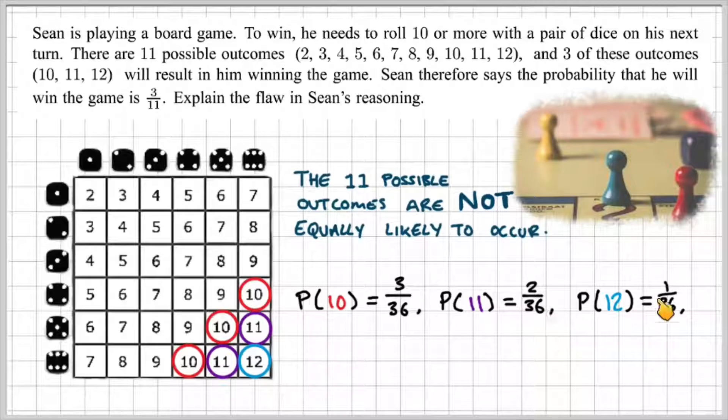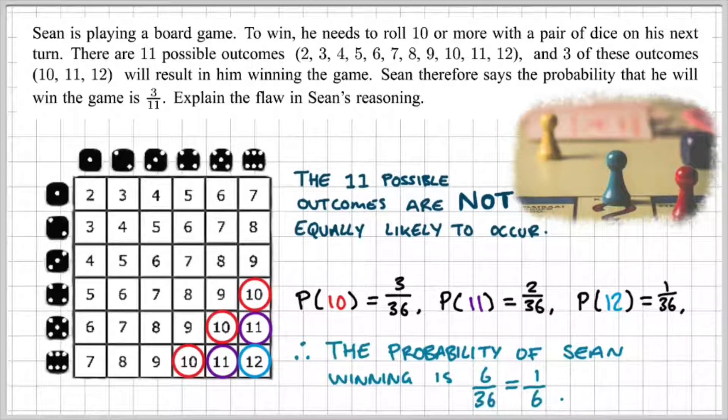So if we add the probabilities together, 3 over 36, 2 over 36, and 1 over 36, the probability of Sean winning is 6 out of 36, which is 1 over 6.